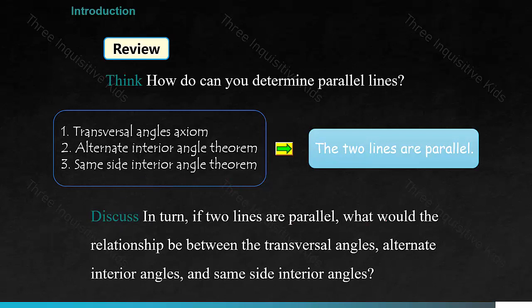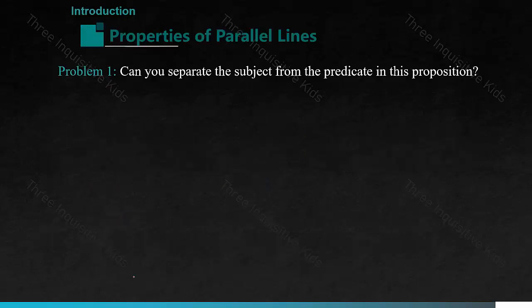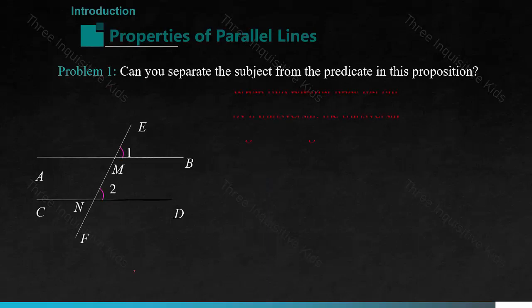If two lines are parallel, what would the relationship be between the transversal angles, the alternate interior angles, and the same side interior angles? Can you separate the subject from the predicate in this proposition? Here we have our diagram and our proposition is: when two parallel lines get cut by a transversal, the transversal angles are congruent.